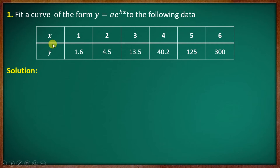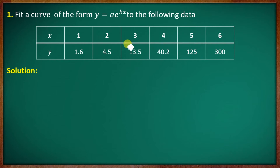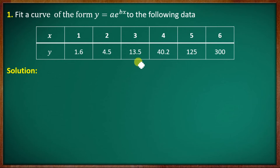First question: fit a curve of the form y equal to a into e raised to bx to the following data. x is 1, 2, 3, 4, 5, 6 and y is 1.6, 4.5, 13.5, 40.2, 125, 300.